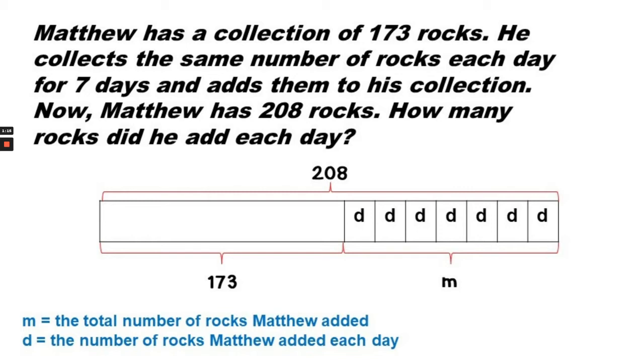Looking at the tape diagram, we can see that the total number is 208 rocks. That's how much Matthew has now. He started with 173 rocks, then he collected more rocks over seven days.